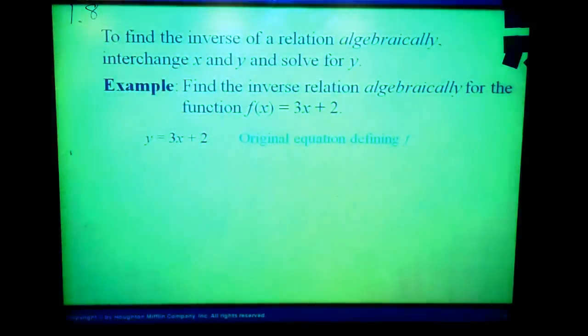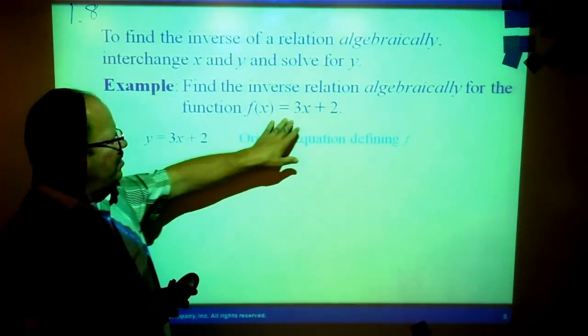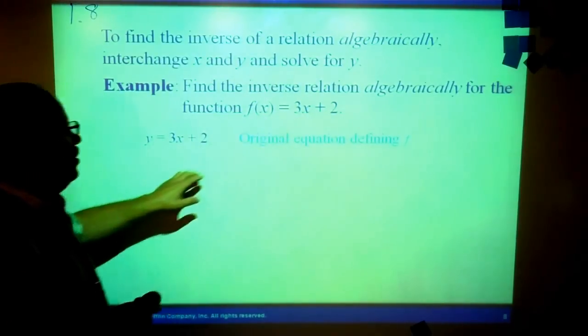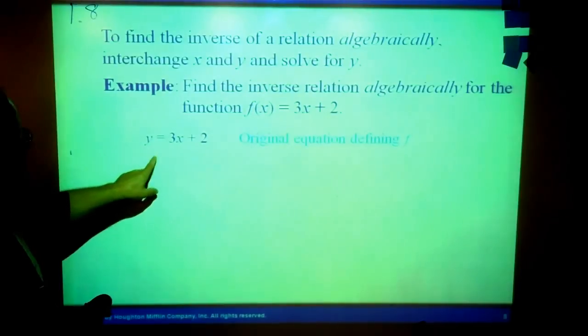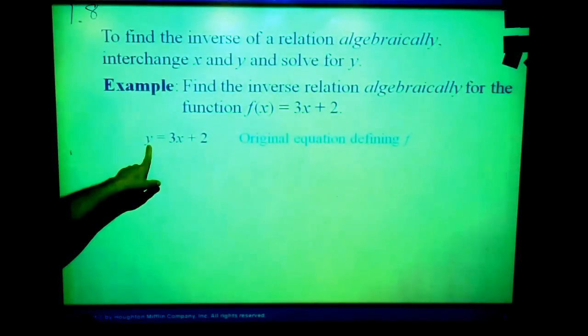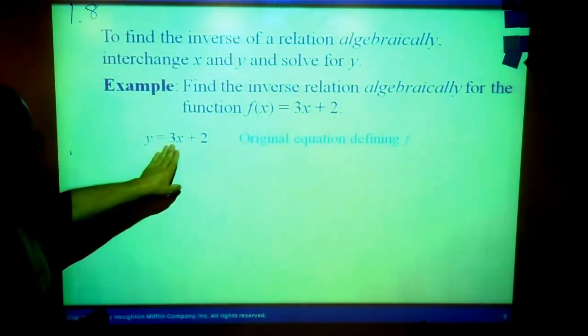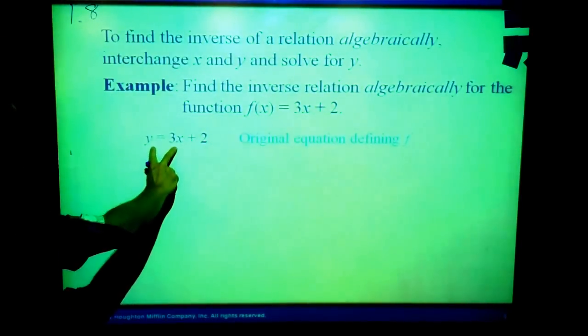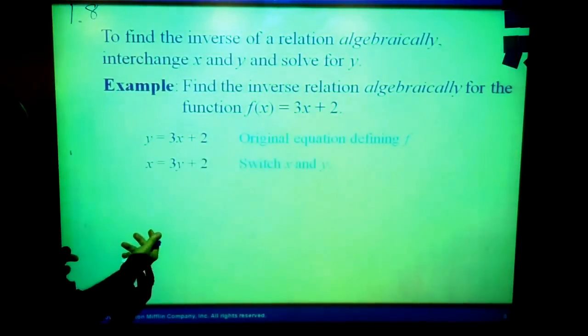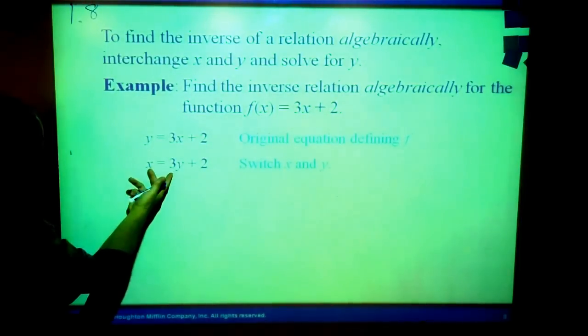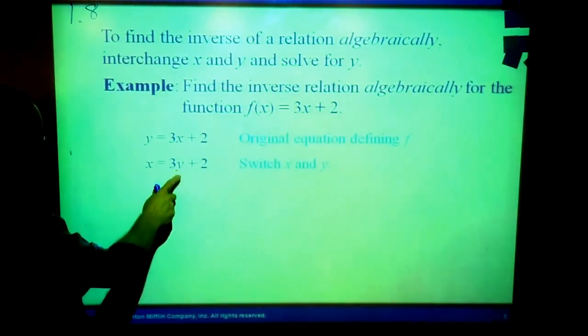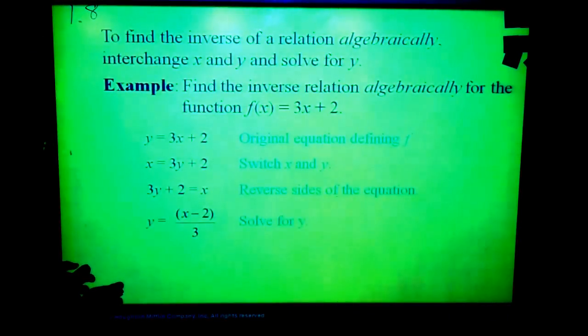To find it algebraically, if I give you this and I say what is the inverse of f(x) equals 3x plus 2, well, f(x) and y are just the same thing. So if we write this y equals 3x plus 2, and then all we're going to do is switch the x and the y. We switch them, and then we solve this out again for y. And that will give us the inverse function.